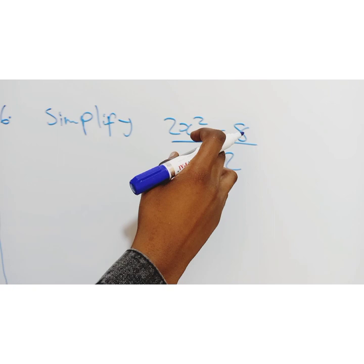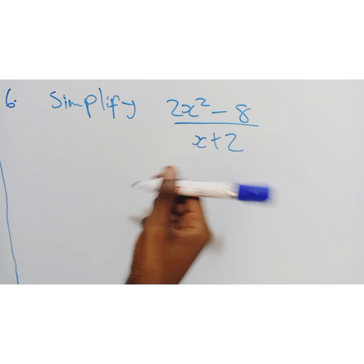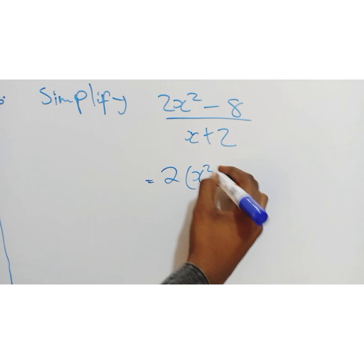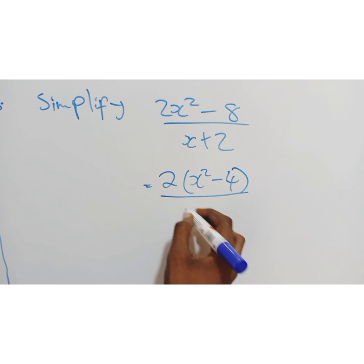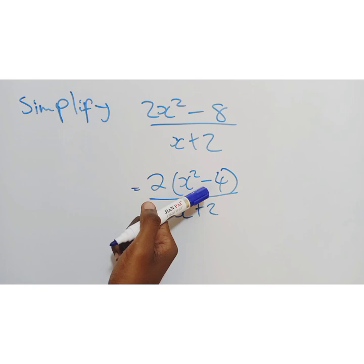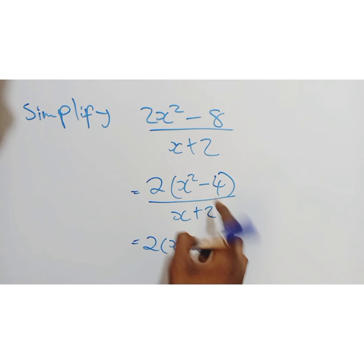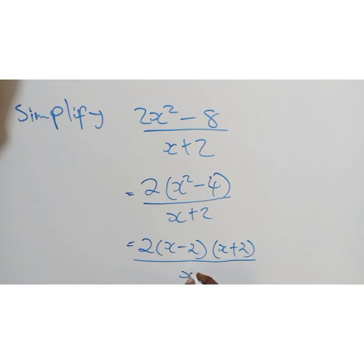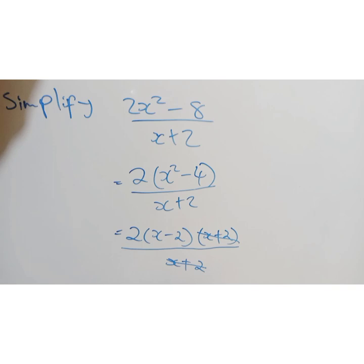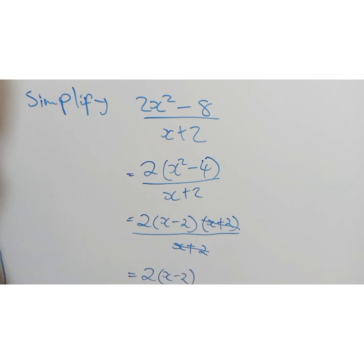Our final example. So we have 2x squared minus 8 over x plus 2. So what we do here, you factorize. So we have 2. So x squared minus 2 into 8 will give us 4. Then we have x plus 2. So what we do here now, this has to be further factorized. So we have 2. Then x minus 2. Difference of 2 squares. Then x plus 2. By now you know difference of 2 squares. Then x plus 2. Once I reach this level, I cancel what's common. So this will cancel with that. So I have 2. Then x minus 2.